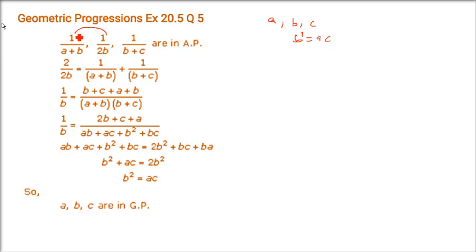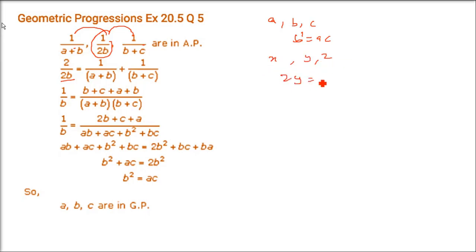These three are given in AP. So 1/2B − 1/(A+B) = 1/(B+C) − 1/2B, or equivalently 2·(1/2B) = 1/(A+B) + 1/(B+C). If X, Y, Z are in AP, 2Y = X + Z. So 2·(1/2B) equals these two extreme terms. When we resolve it, we will get B² = AC, meaning A, B, C are in GP.